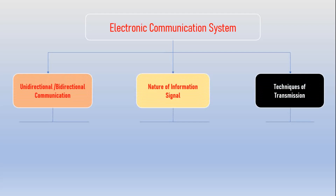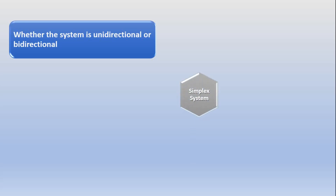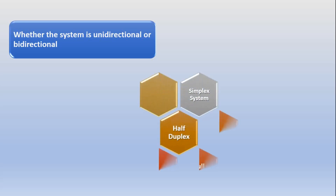The first type depends on the direction of the communication system — whether the system is unidirectional or bidirectional. The second type depends on the type of the transmitting signal. The third type depends on the process of transmission. Depending on those parameters, we can classify communication systems into three categories. The first type has two parts: unidirectional and bidirectional. In unidirectional we have the simplex system, and in bidirectional we have the half duplex and full duplex systems.